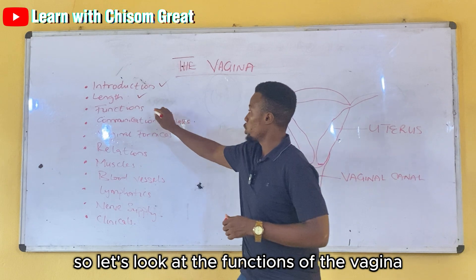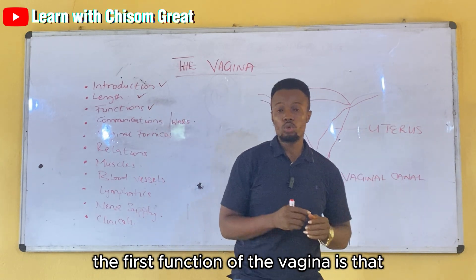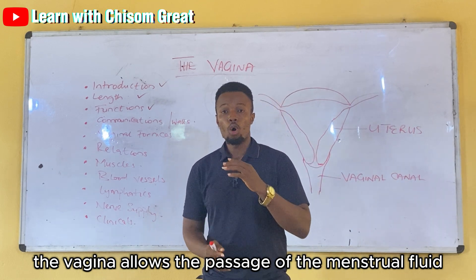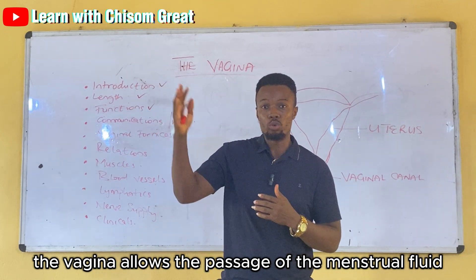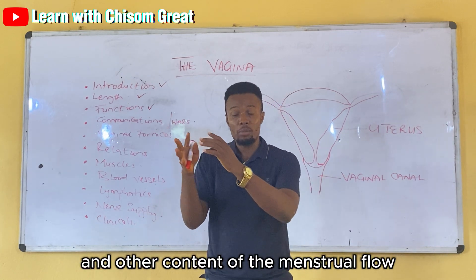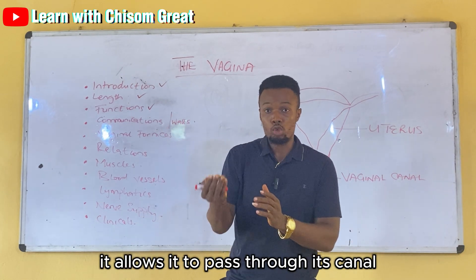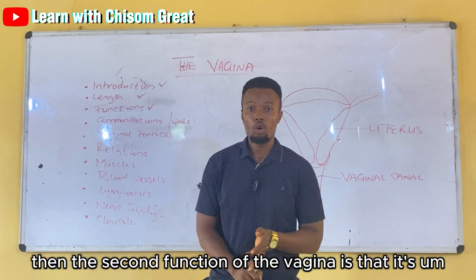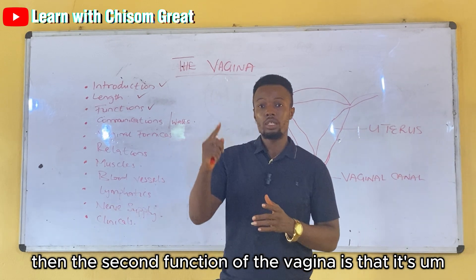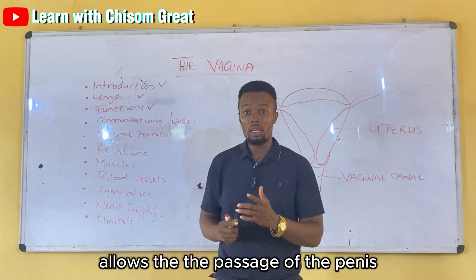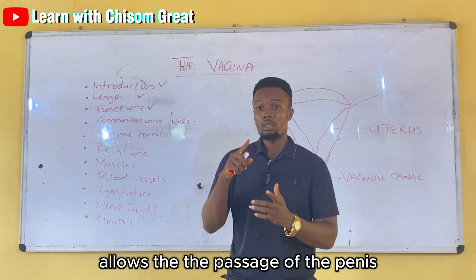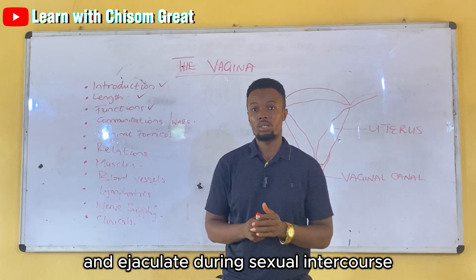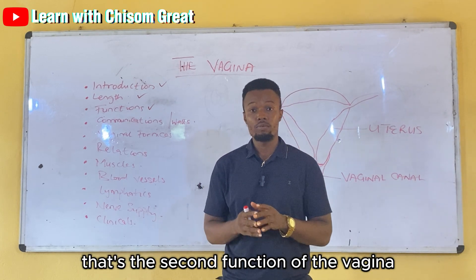The first function of the vagina is that it allows the passage of menstrual fluid and other contents of the menstrual fluid through its canal. The second function is that it allows the passage of the penis and ejaculate during sexual intercourse.